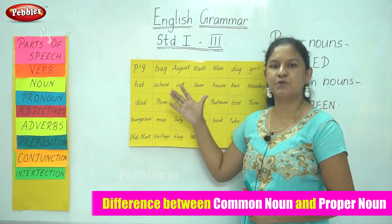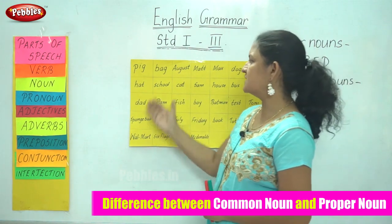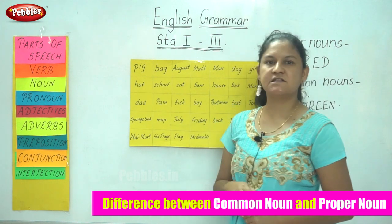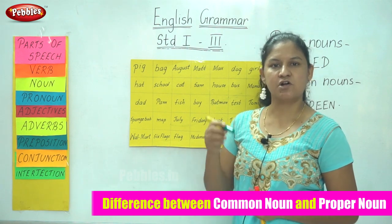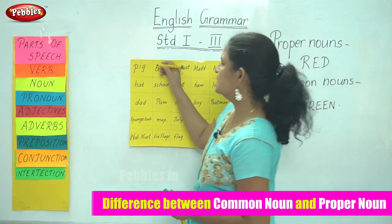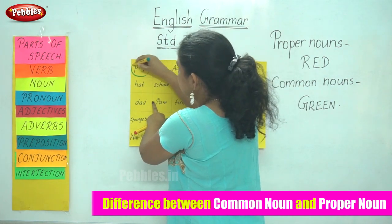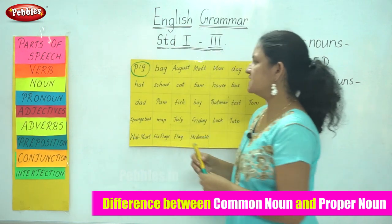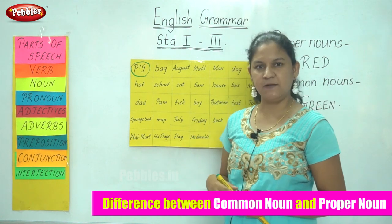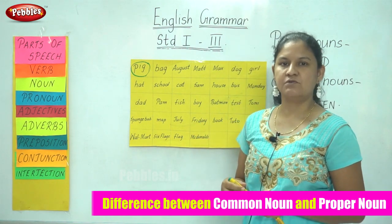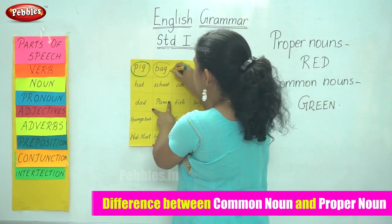If I take the word pig, it is the name of an animal and it is a common noun. So I will mark it with the green sketch. The next word is bag. Bag is the name of a thing and is a common noun, so again I am going to use my green sketch to mark the word bag.